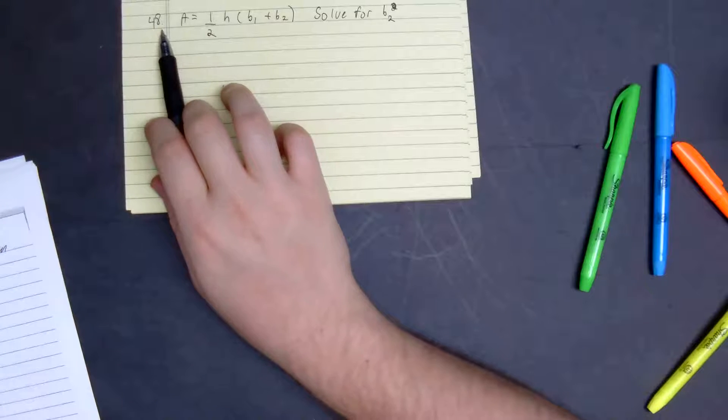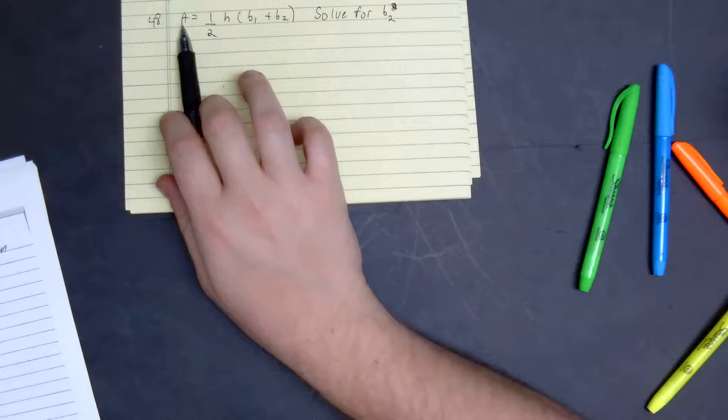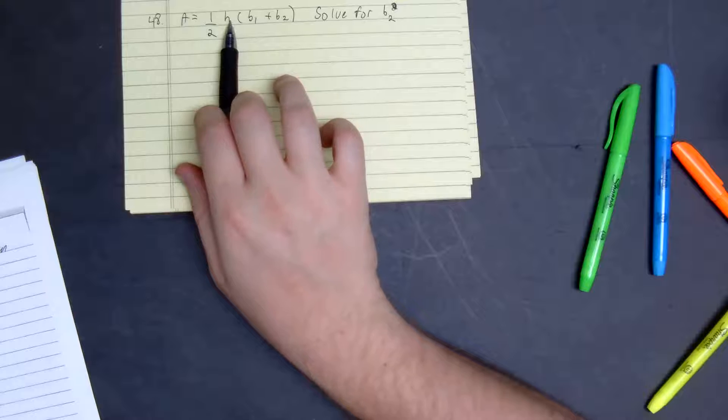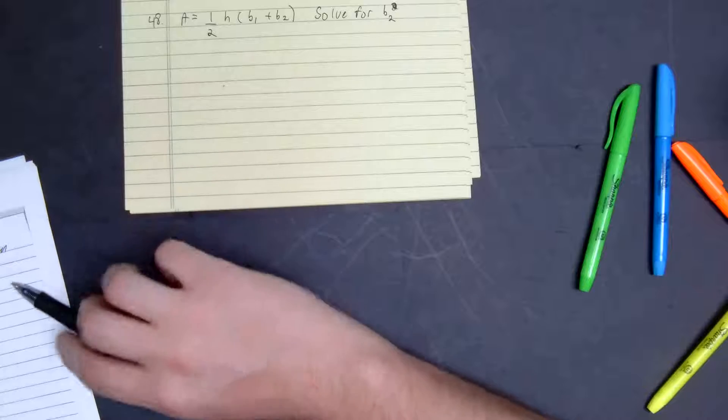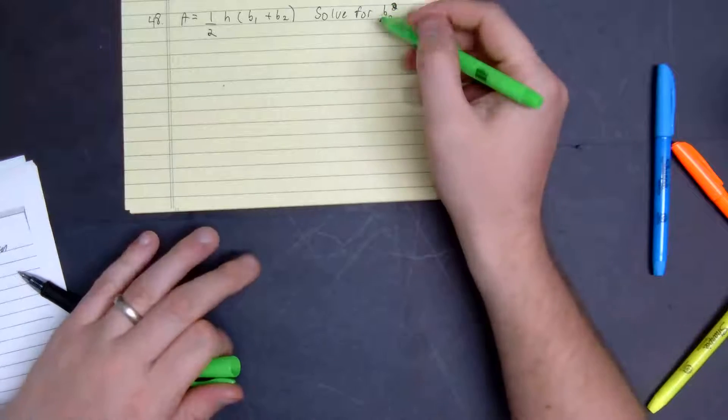We'll look at number 48. We have the area equals one-half times the height times base one, or base one plus base two, and the goal here is to solve for base two.